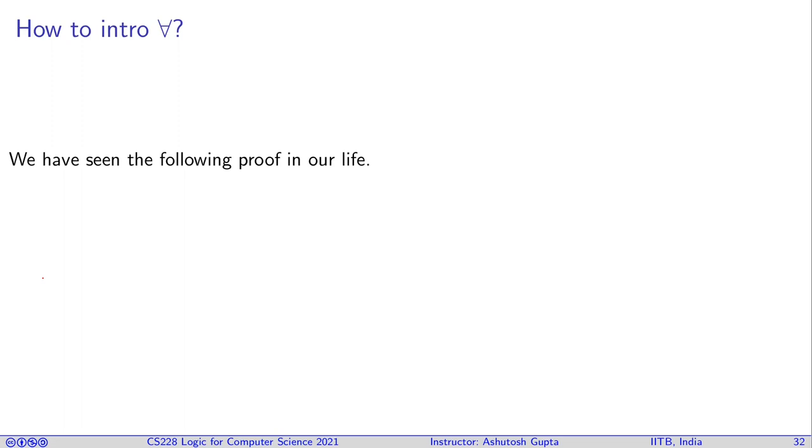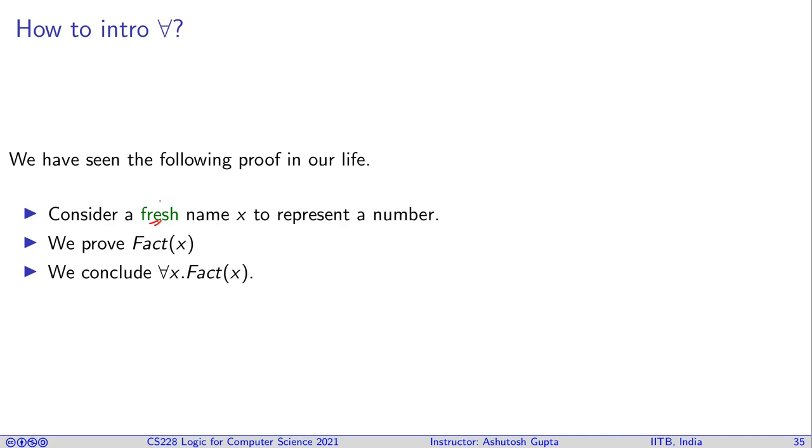Now, let's see how can we do the introduction for all. So, we have seen the following proofs in our life. The proof is like you choose some x to represent some number and you prove some fact about x. And since you have chosen x freely without any restriction, then you can make a statement this is true for all x. This is a very common pattern in your proof. The important point is there's an explicit statement at some point of time you say, this is a new x. It has not been referred to in the past and nobody else knows it. Now, now we have introduced it. Now, you can refer to it.